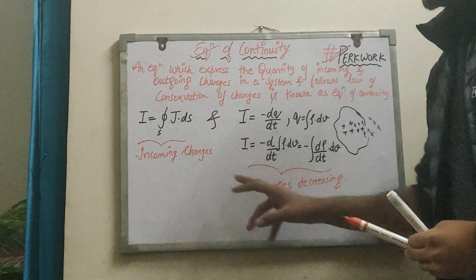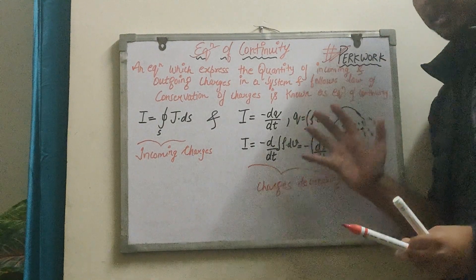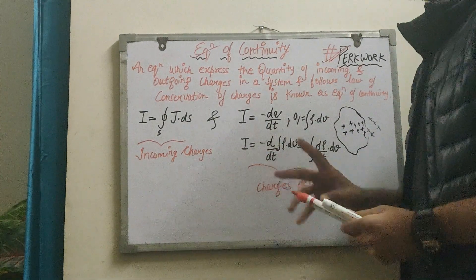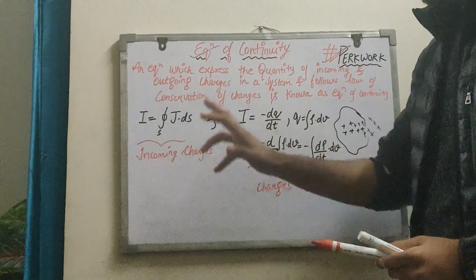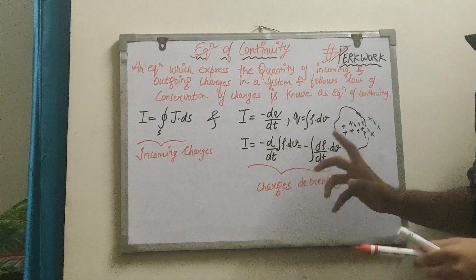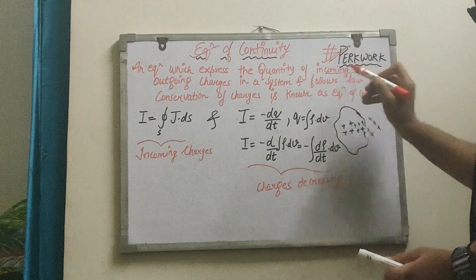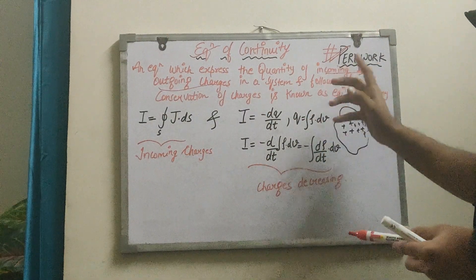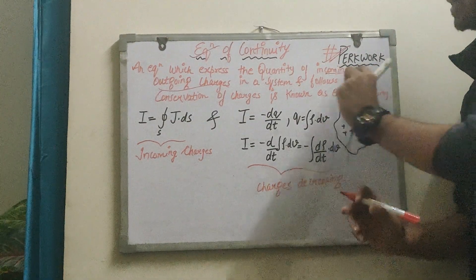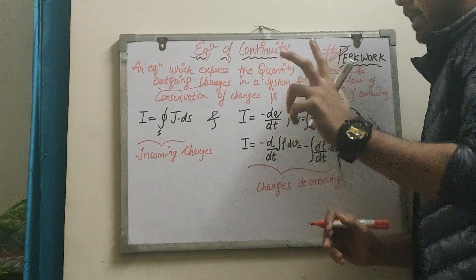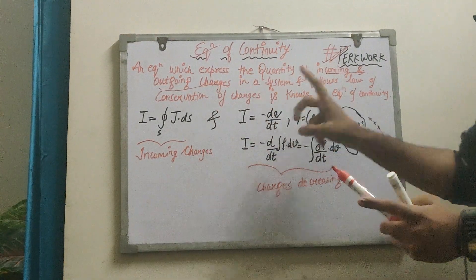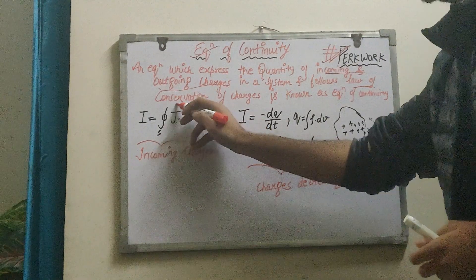First, let me tell you that we have to see the derivation of it and understand it. Let's learn the definition of what it says: an equation which expresses the quantity of incoming and outgoing charges in a system, and follows the law of conservation of charge, is known as the equation of continuity. First, the law of conservation of charges.